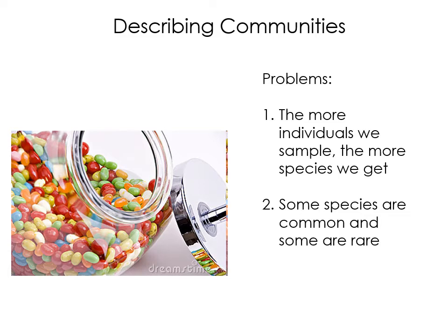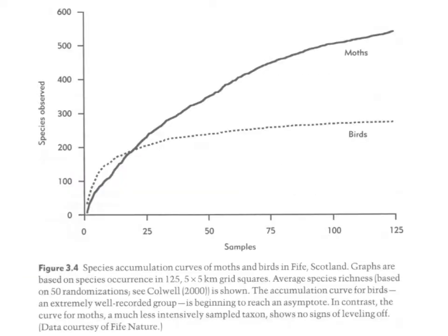There's a problem though: ecological communities are really messy and it's hard to census the entire thing, so we calculate diversity indices based on a sample. Some species are common and some are rare — you might have a jelly bean jar where half are red and only two are black. Also, the bigger the sample you take, the more species you're likely to find, because you're more likely to capture rare species. A smaller sample means lower apparent species richness. One solution is to look at the species accumulation curve.